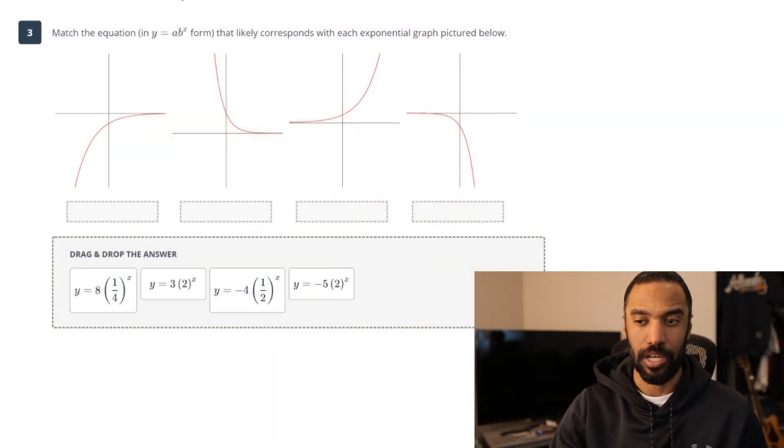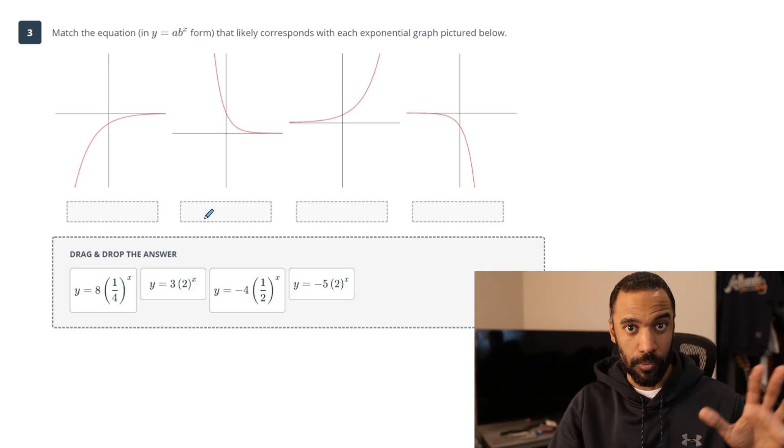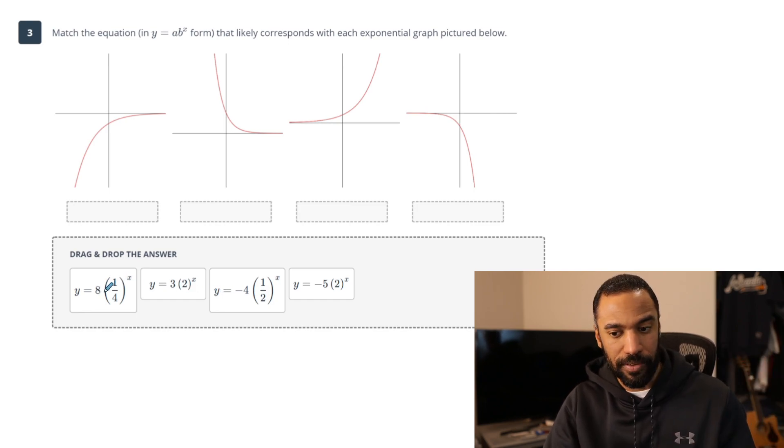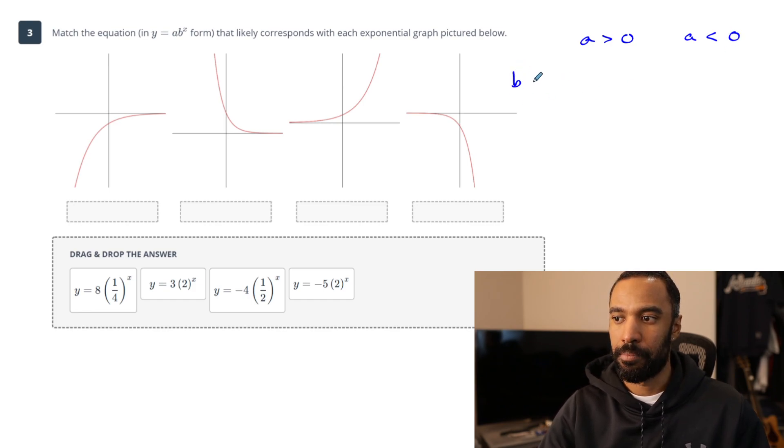Number 3 says match the equation in y equals a times b to the x form that likely corresponds with each exponential graph pictured below. So in order to make sense of this on your own, regardless of these equations, it's not really about the numbers themselves. For the a value, it's about its sign. Is it positive or negative? And the b value is about is it more than 1 or is it less than 1?